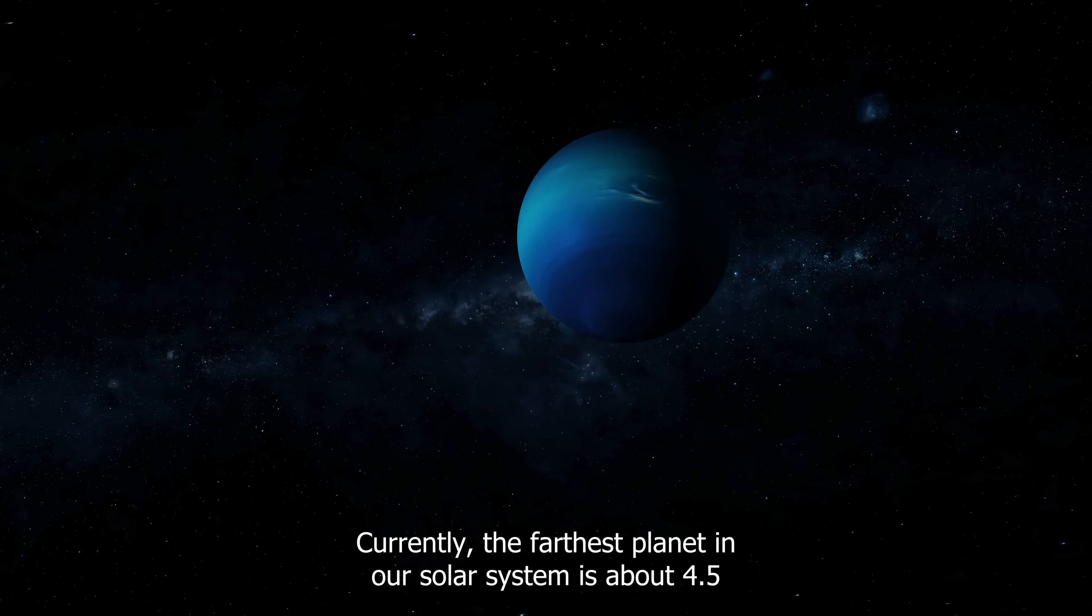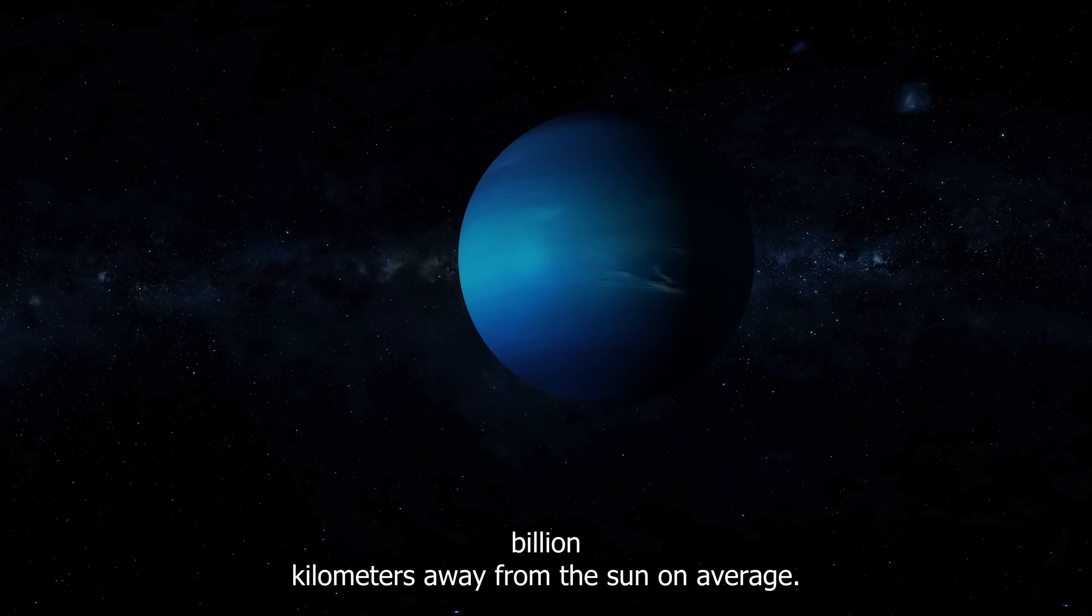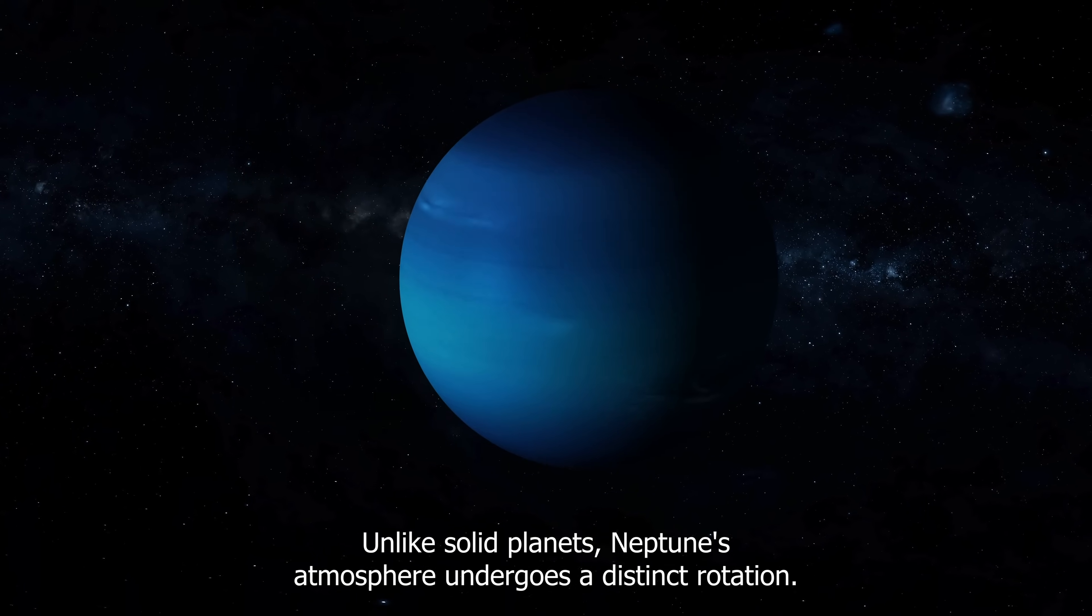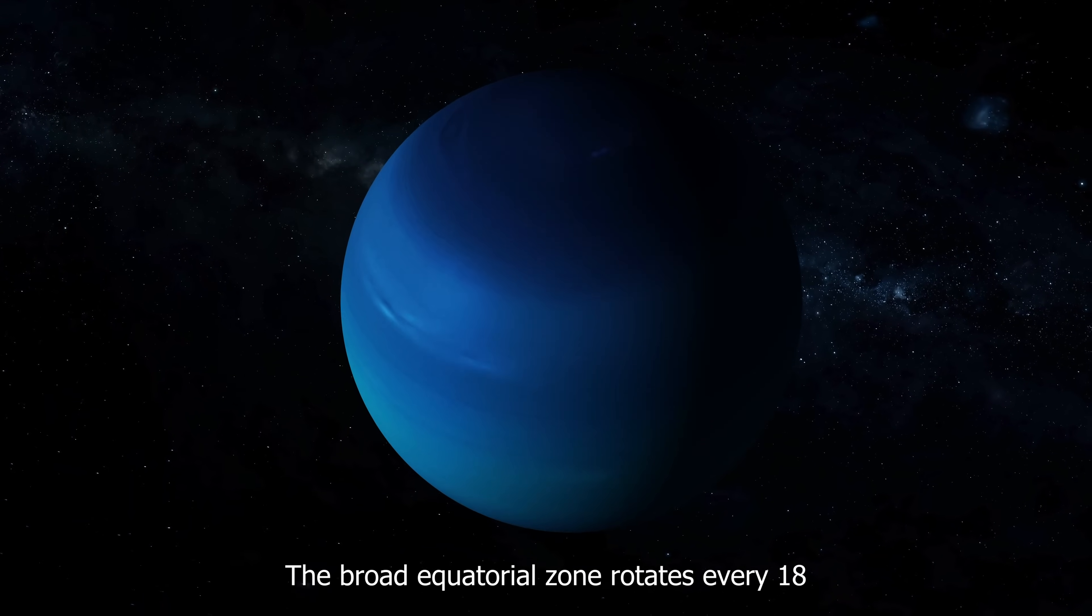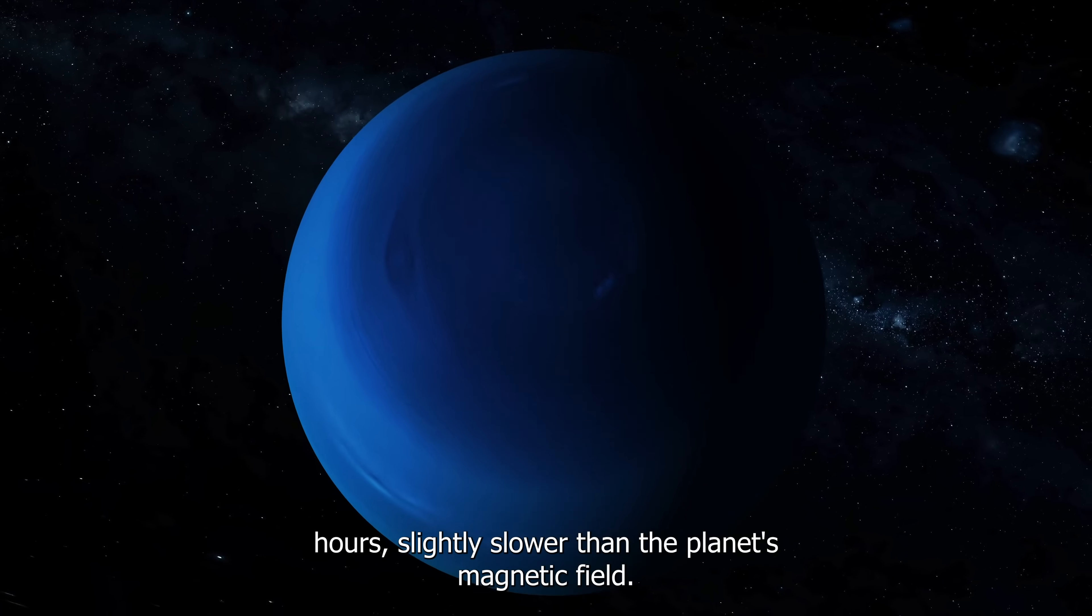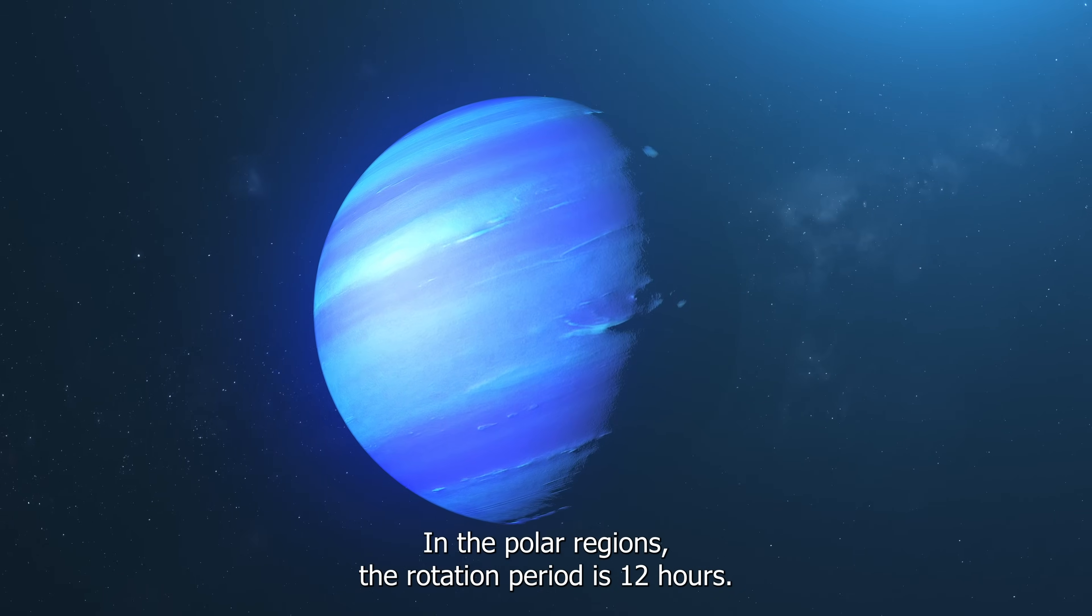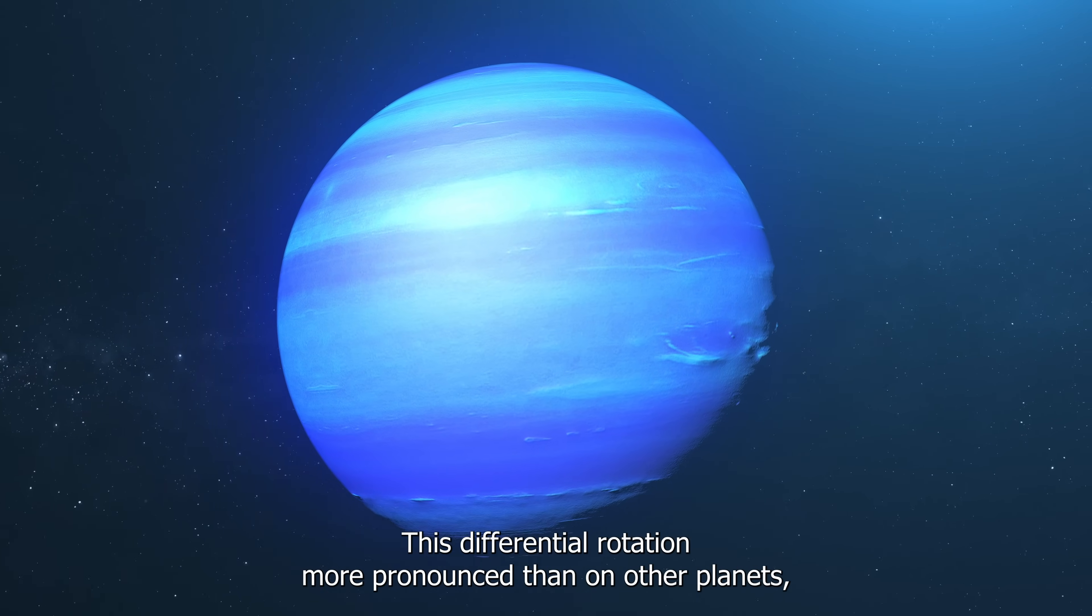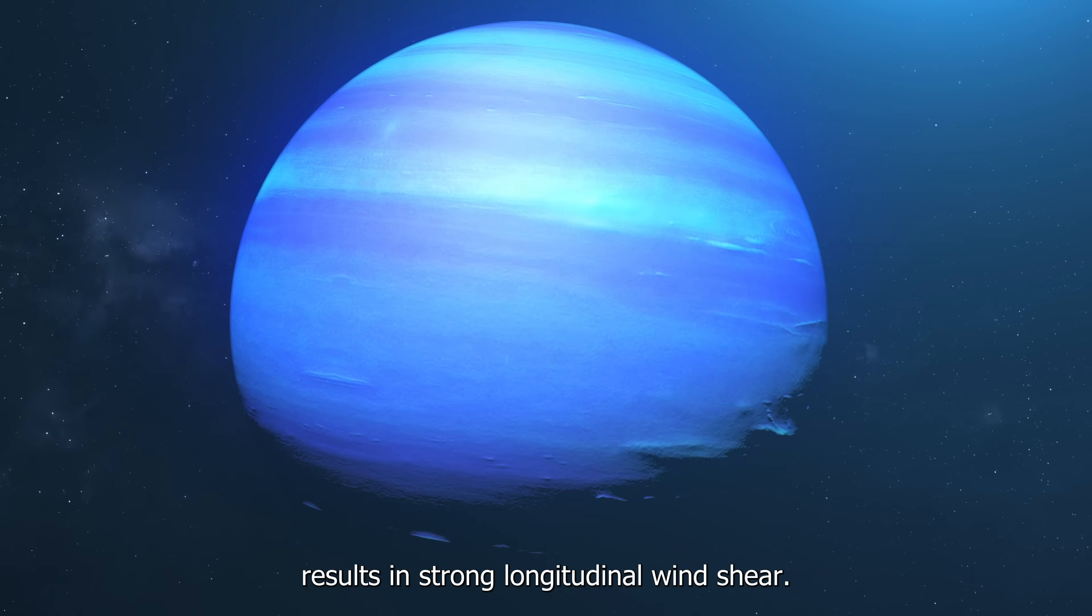Neptune, currently the farthest planet in our solar system, is about 4.5 billion kilometers away from the sun on average. Unlike solid planets, Neptune's atmosphere undergoes a distinct rotation. The broad equatorial zone rotates every 18 hours, slightly slower than the planet's magnetic field at 16.1 hours. In the polar regions, the rotation period is 12 hours. This differential rotation results in strong longitudinal wind shear.